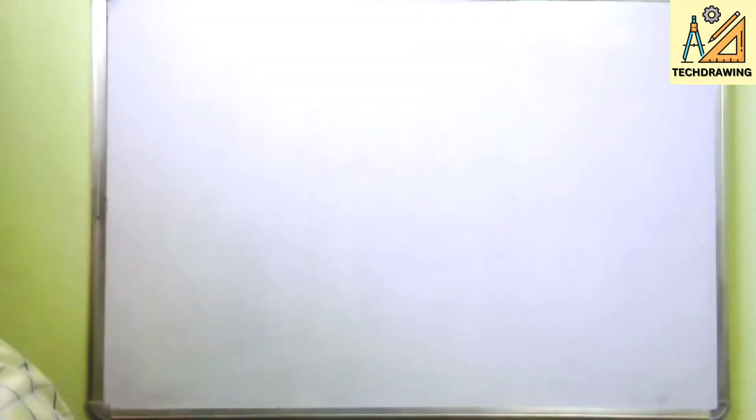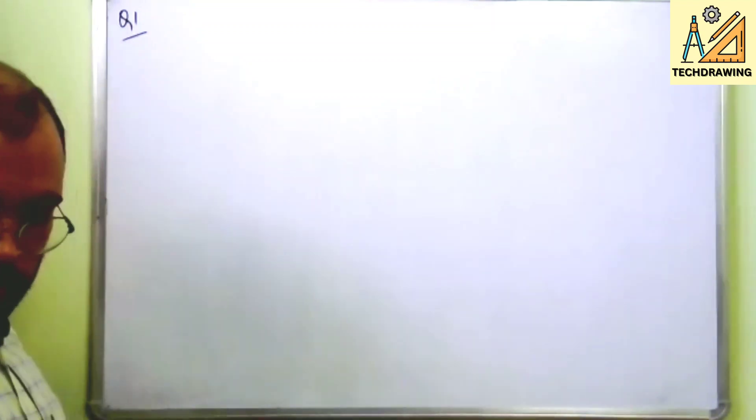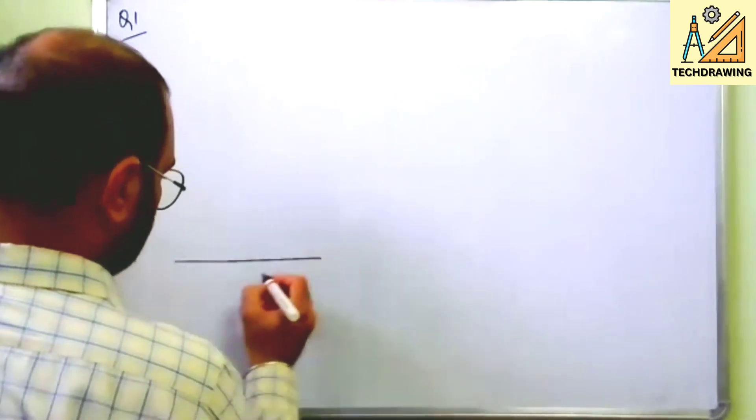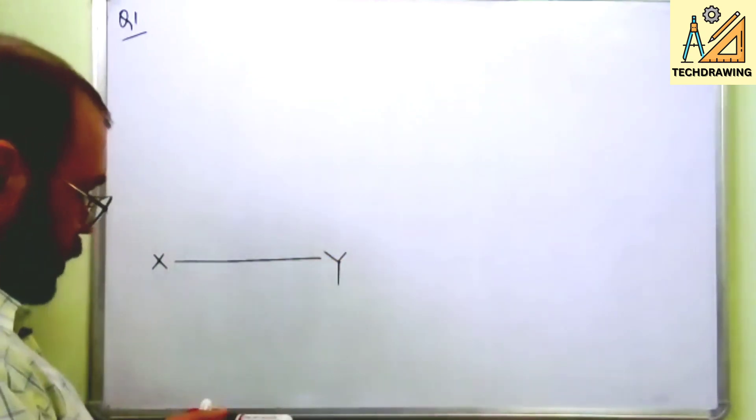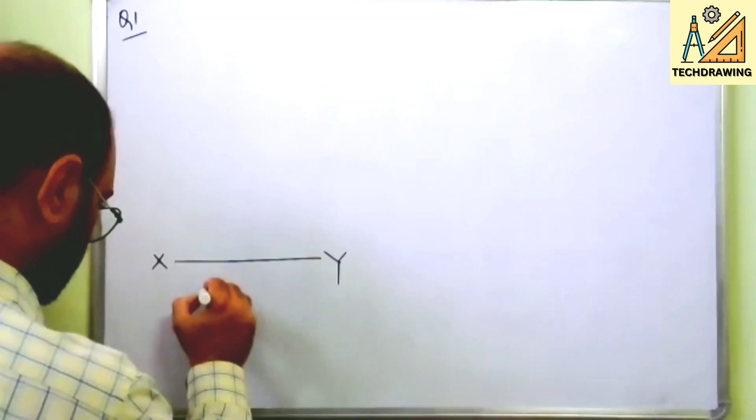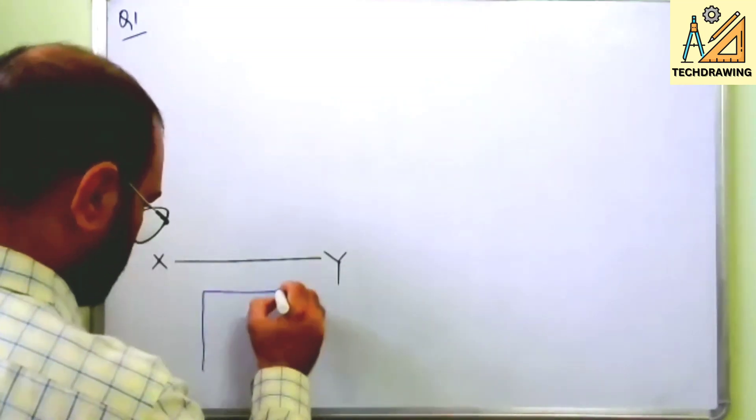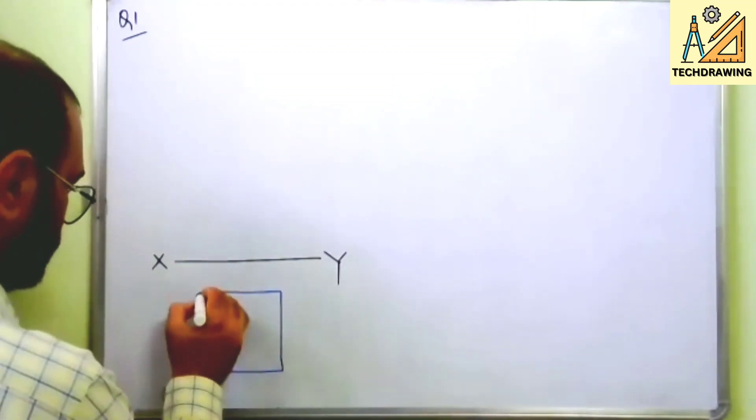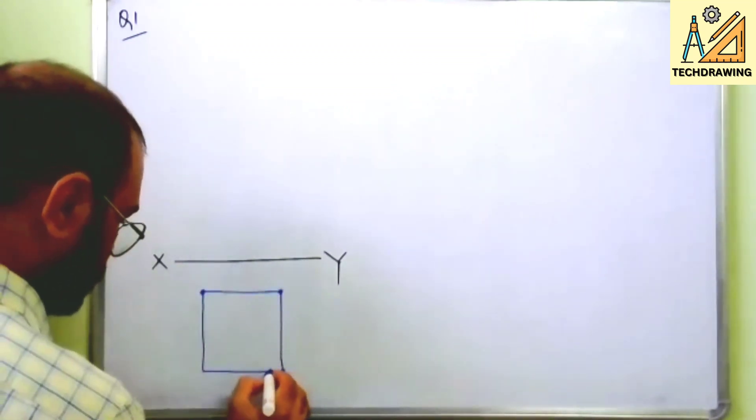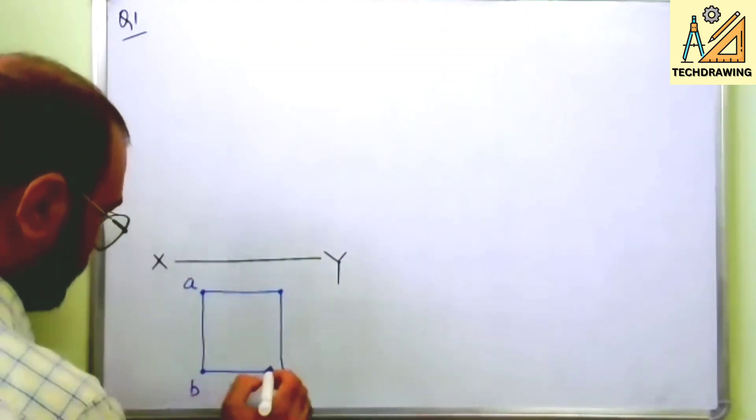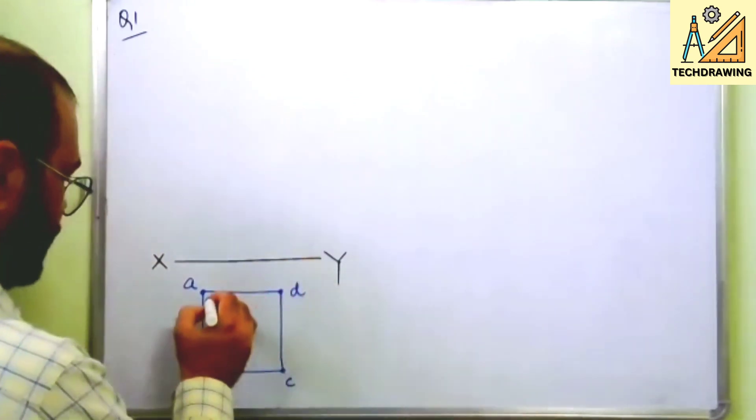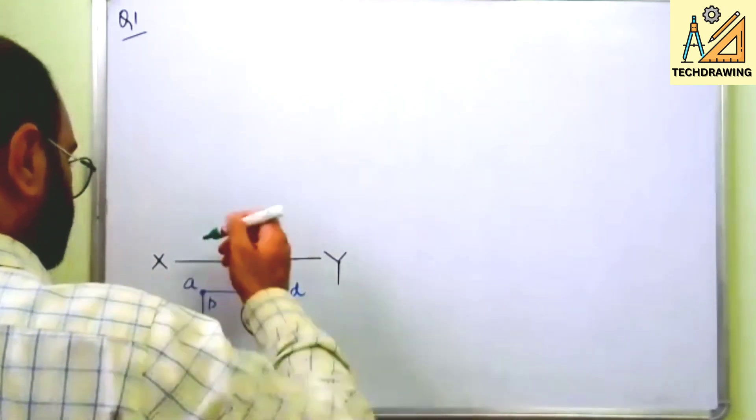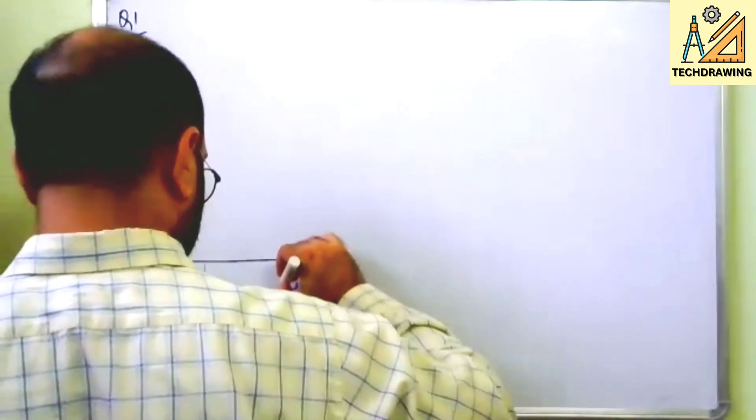Okay, so let us draw the projection first. This is question number one. So this is X, this is Y. This is the top view, let this be A, B, C, D and let the base be P, Q, R, and S. Right, so then draw the projection line.